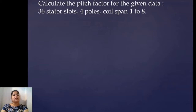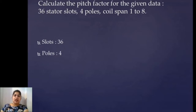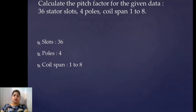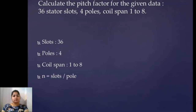First problem: calculate the pitch factor for the given data — 36 stator slots, 4 poles, and coil span is 1 to 8. We are given 36 number of slots, 4 number of poles, and coil span is 1 to 8. So the coil can be either full pitch or shorted. To understand whether the given coil is full pitch or shorted, we will first find out N, which is slots per pole. Substituting, we get N equals 9.